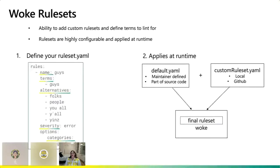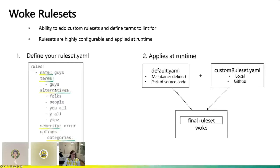A rule set is essentially a YAML file where you can define the terms to lint for. Here is a concrete example of the term 'guys.' The name of this rule is called 'guys.' The terms you can define as guys — singular, plural, and synonyms for this term — are very flexible. There is also a key for alternatives. So instead of using 'guys,' the tool will suggest alternatives such as 'folks,' 'people,' 'you all,' or 'y'all.'